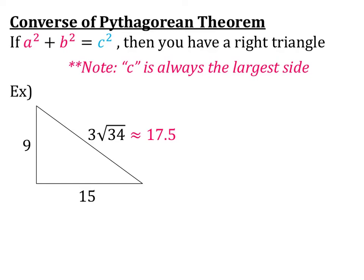So that means that 3 root 34 is going to be my hypotenuse, so it's going to be my C in the equation. So in this case, I'm going to write C squared and then leave a blank, because I don't know if it's equal or not. I have to wait until the end to fill that blank in. A squared plus B squared. Since 3 root 34 is my largest side, that is my C. And then I'm going to fill in my 9 for A and my 15 for B.